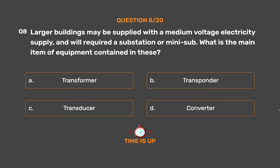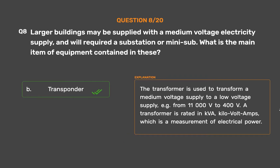The correct answer is Option A: Transformer. The transformer is used to transform a medium voltage supply to a low voltage supply — for example, from 11,000V to 400V. A transformer is rated in kilovolt-amps, which is a measurement of electrical power.